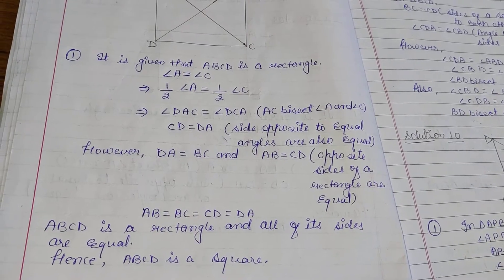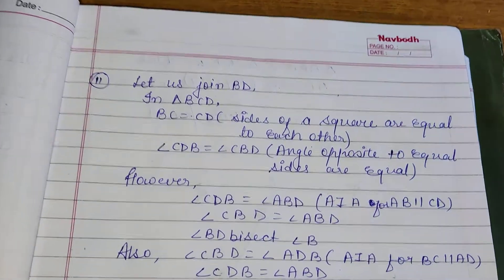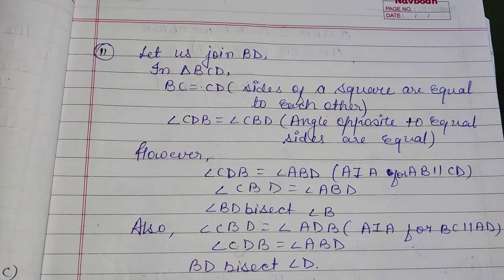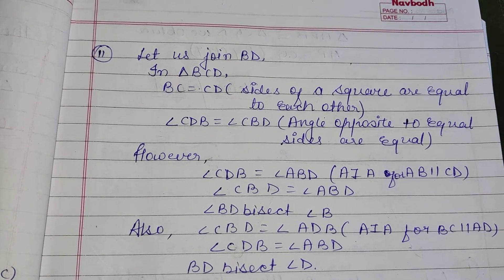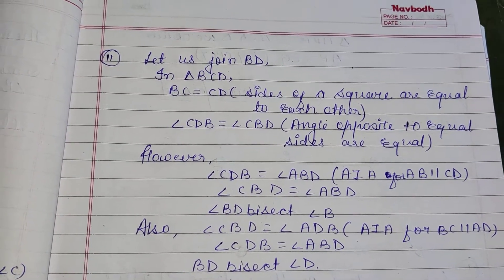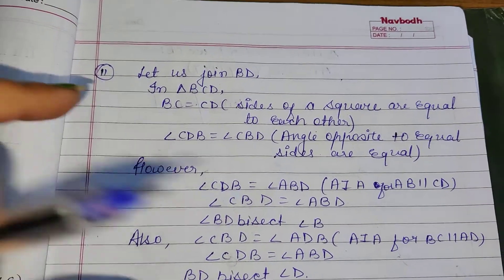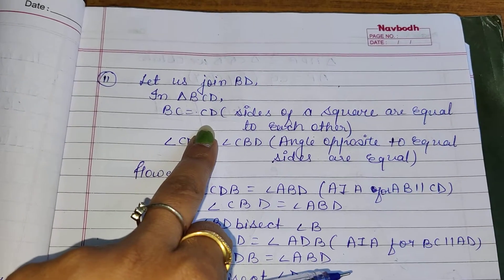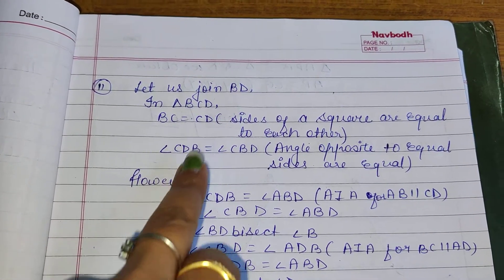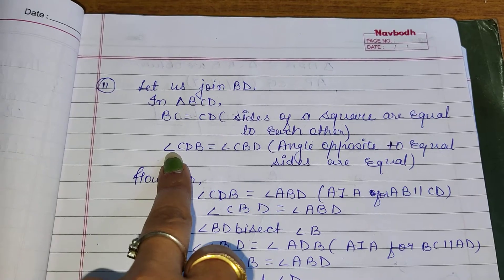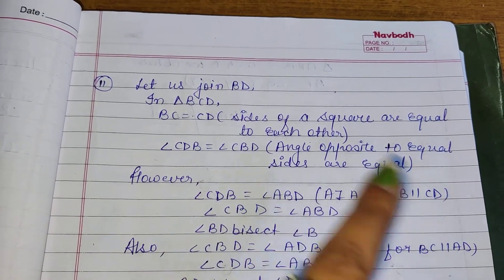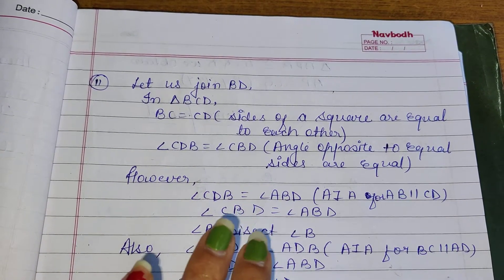In the second part, let us join BD. BD is also a diagonal. In triangle BCD, BC is equal to CD — sides of a square are equal to each other. Therefore, angle CDB is equal to angle CBD — angles opposite to equal sides are equal.